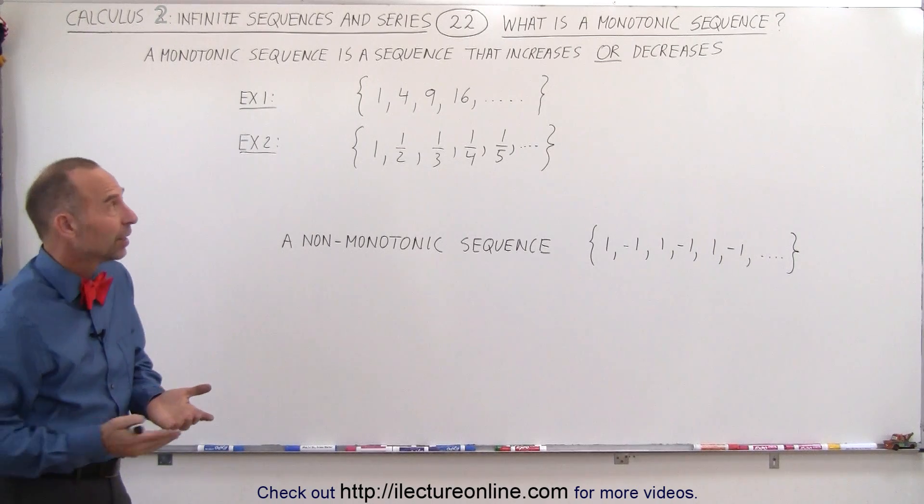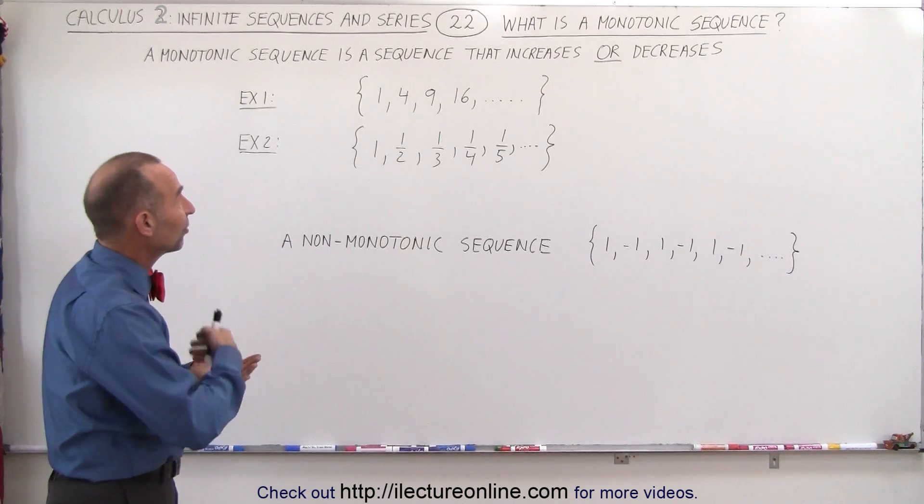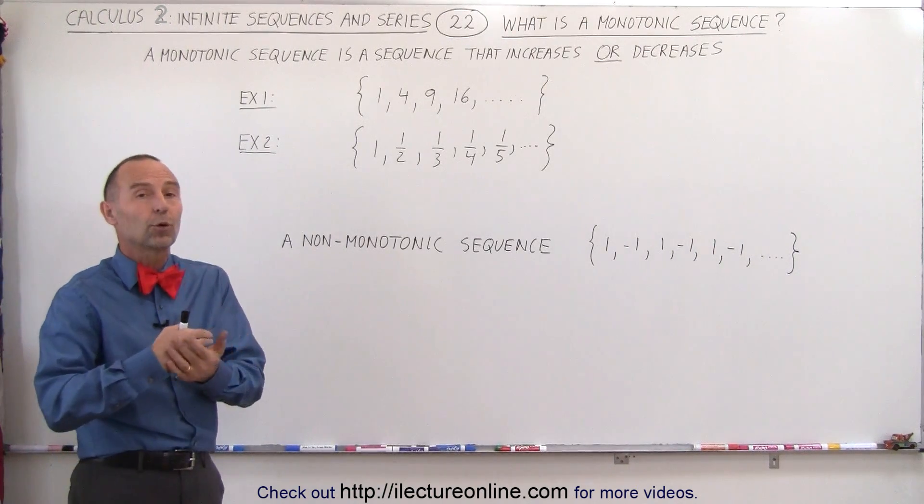Well, it's actually fairly simple. A monotonic sequence is a sequence that either increases or decreases.